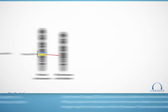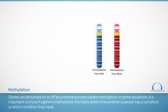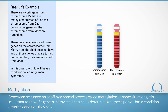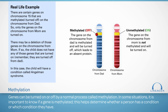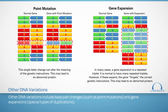Genes can be turned on or off by a normal process called methylation. In some situations, it is important to know if a gene is methylated or turned off, as this helps determine whether a person has a condition or which condition they have. For example, certain genes on the copy of chromosome 15 from dad are normally methylated or turned off, while those same genes on the copy from mom are not methylated — they are turned on. If a person has a deletion on the copy of chromosome 15 inherited from mom, he or she would be missing the instructions from those genes. Since they are turned off on the copy from dad, this leads to a specific diagnosis called Angelman syndrome.